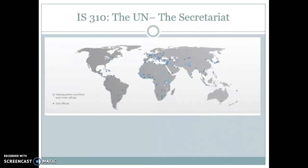The Secretariat itself we think of as having operations at the headquarters in New York City, but this is a map of where the main offices of the Secretariat are around the world. You can see they're on all the continents, with all kinds of main offices, headquarters locations, and sub-offices. Beyond this, there are field offices that report into the sub-offices. So it truly is a global organization, and your Secretary General is someone who has to be able to direct a massive organization of 44,000 people.